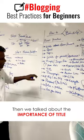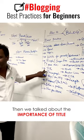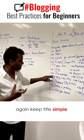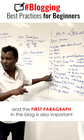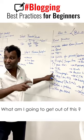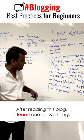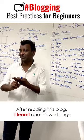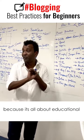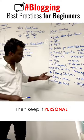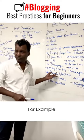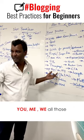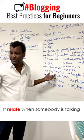The title is important — it's what makes you read. Keep it simple. The first paragraph is also important: what am I going to get out of this? After reading this blog, I should have learned one or two things — that should be the goal, because it's all about education. Keep it personal; use terms like 'you,' 'me,' 'we' — those help people relate when somebody's talking.